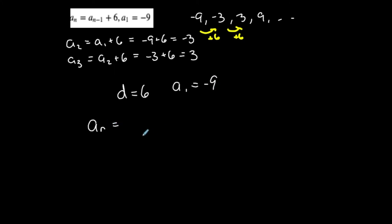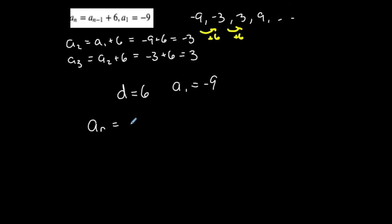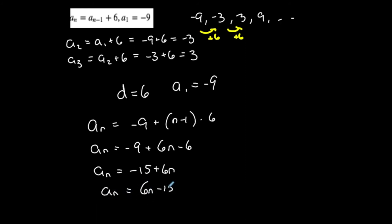So I can find the nth term in explicit form: an equals a1 plus n minus 1 times d. a1 is negative 9, plus n minus 1 times 6. Simplifying: negative 9 plus 6n minus 6 gives an equals negative 15 plus 6n, which I could also write as 6n minus 15. Both mean the same thing, and this is my nth term for this arithmetic sequence in explicit form.